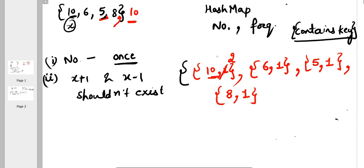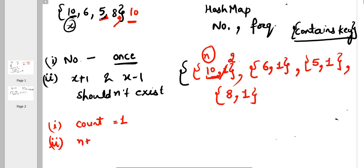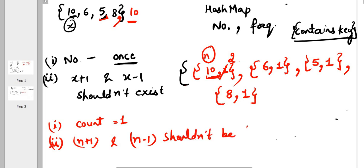Once the map is ready with numbers and their frequencies, we check two conditions: first, the count should be 1; second, if the number is n, then n plus 1 and n minus 1 should not be present in the map. So these two conditions we need to check. Let's write the solution for it.